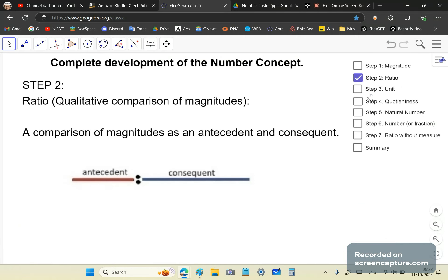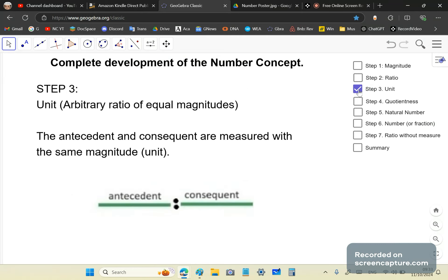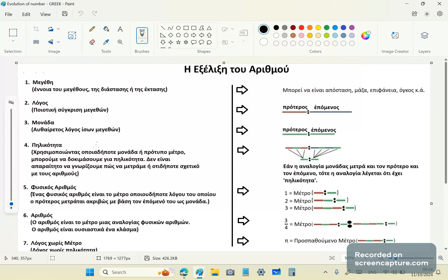This leads very smoothly into the next concept of number, which is a common measuring tool or a unit. We can choose any tool we like as a ratio that will measure all other ratios. A unit is an arbitrary ratio of equal magnitudes. And the antecedent and consequent are measured with the same unit. This is an example of a ratio of equal magnitudes, which we call the unit. In Greek, we call this monada or monas.